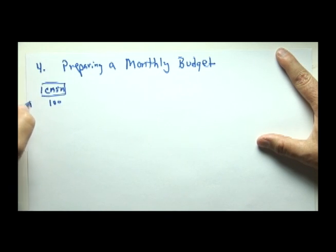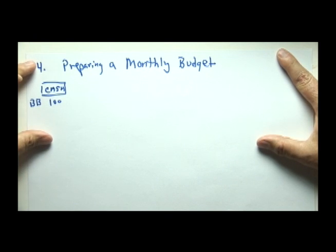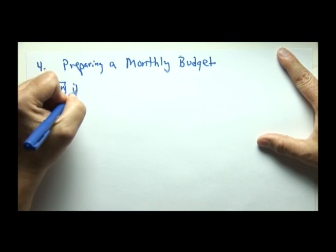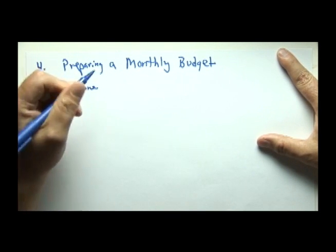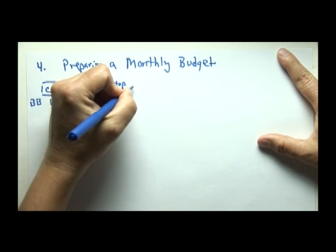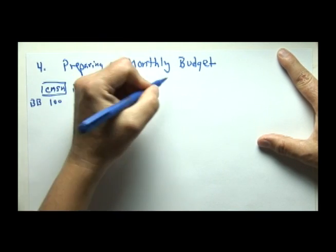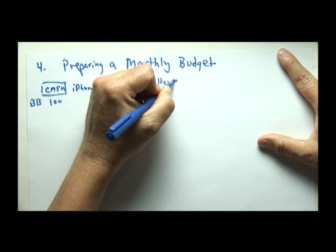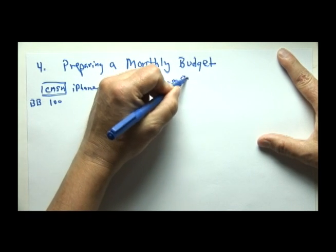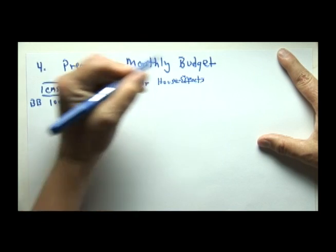Let's put BB over here on the left for beginning balance for the month. The student also owned an iPhone, a laptop, a car, and household effects.